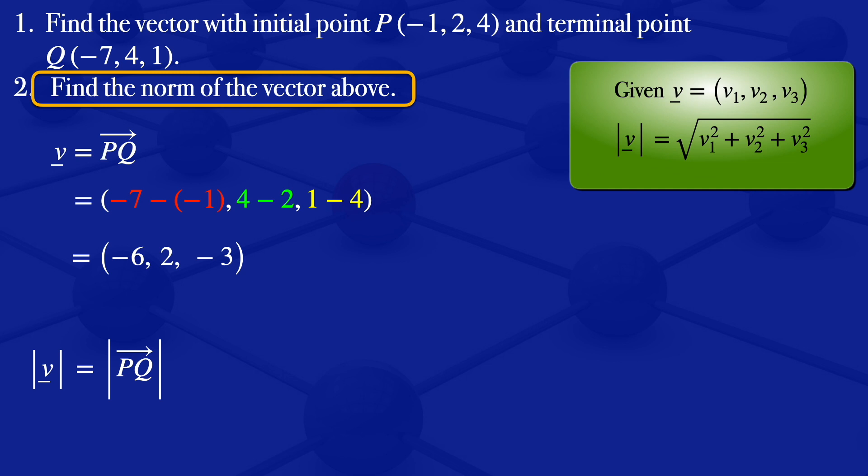If we have a vector v with components v₁, v₂, and v₃, the norm of v is obtained by squaring the individual components, adding them, then taking the square root. So we square these individual components, add them, then take the square root. That gives us 36 plus 4 plus 9, which equals 49.